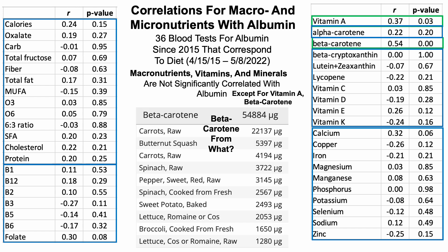Beta-carotene from what? This is a screenshot of Chronometer data — my average intake for the past seven years. My average daily beta-carotene intake is about 55,000 micrograms or 55 milligrams per day, completely from whole food, not supplements. The majority of my beta-carotene intake comes from carrots, but also butternut squash, spinach both raw and cooked (which I've since cut down to limit oxalates), sweet potato, orange sweet potato, red bell pepper, lettuce, and broccoli.